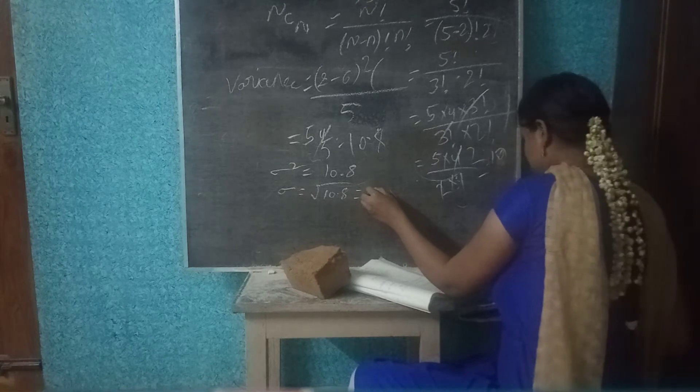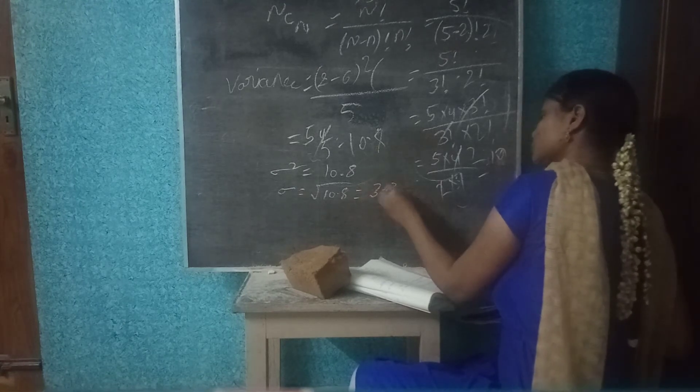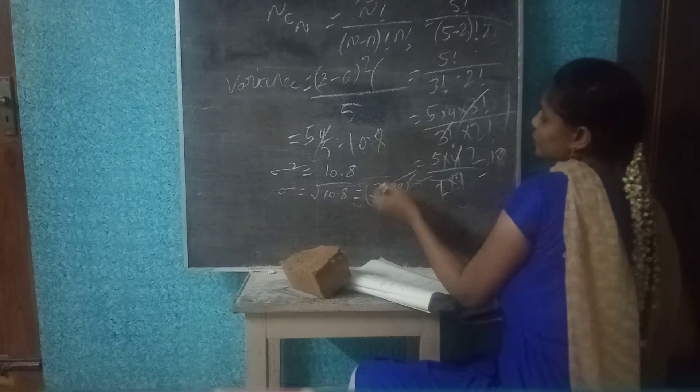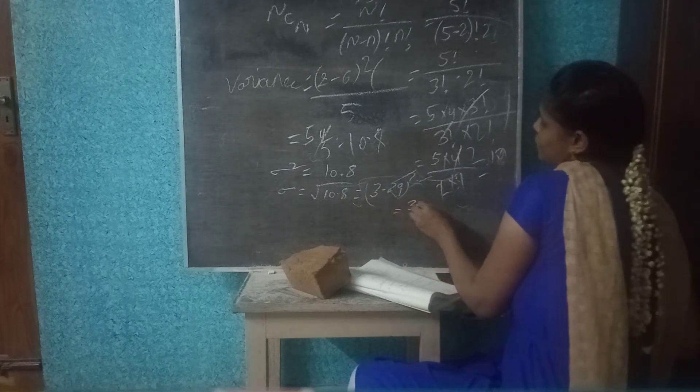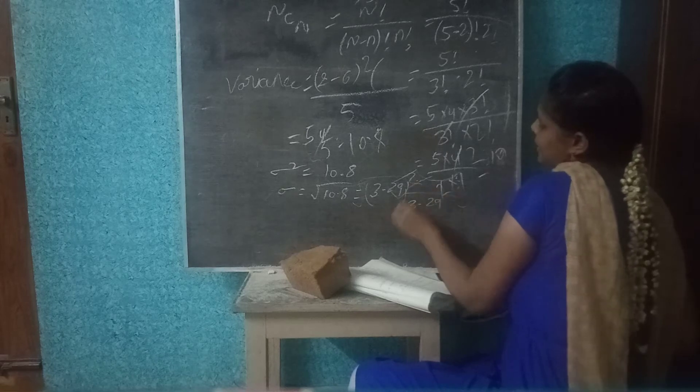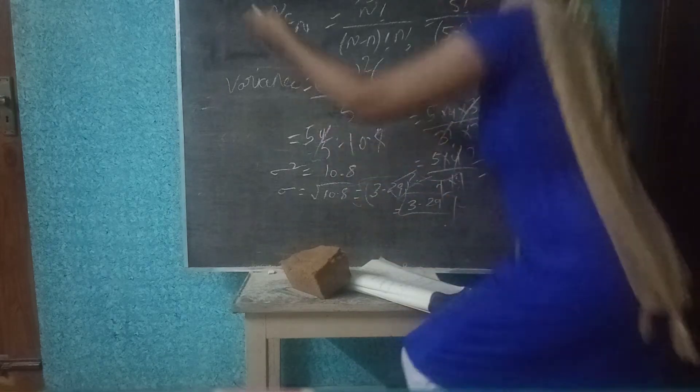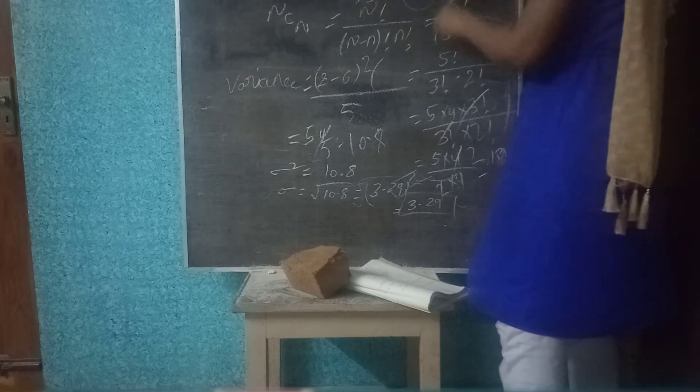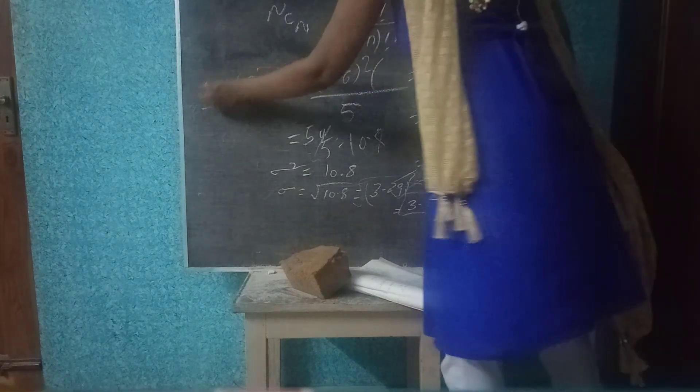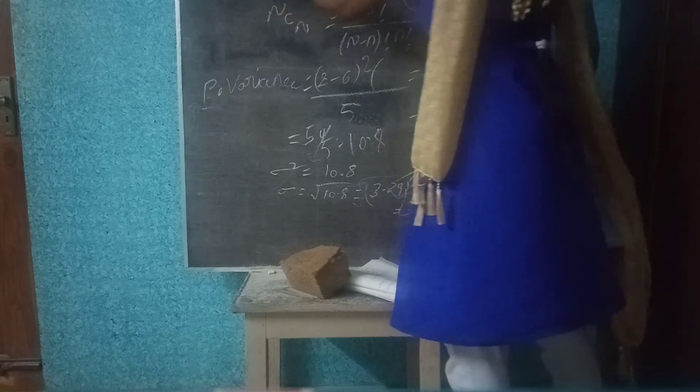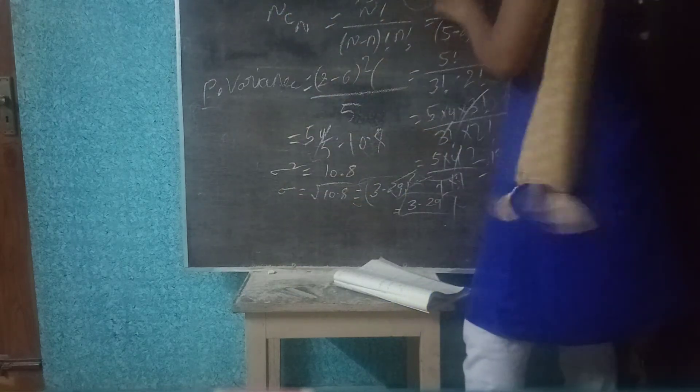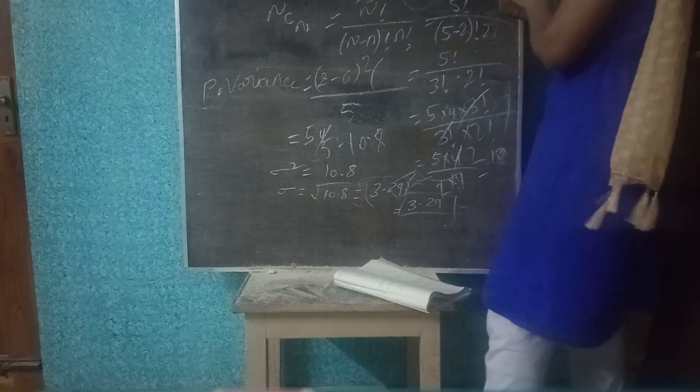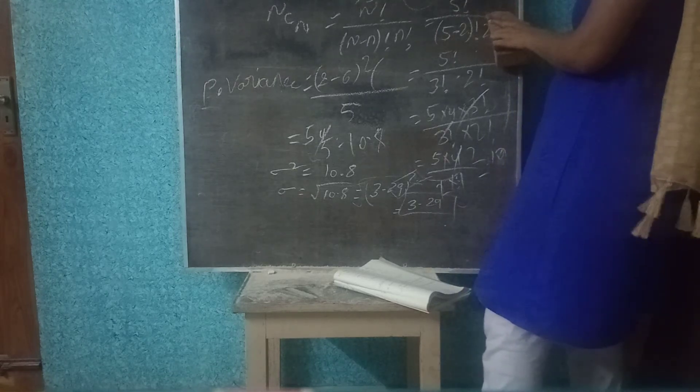Variance square is equal to 10.8. So this is the population variance value and this is the population mean value. This is the population variance value, P variance, P mean. These are the examples of the population mean. So population mean, population variance we have calculated.